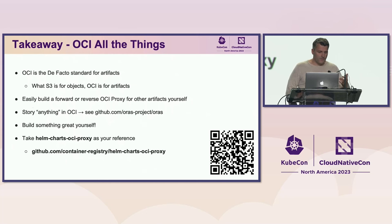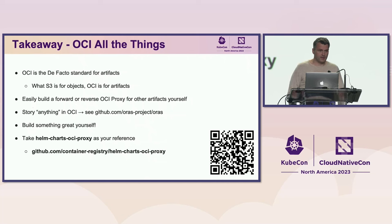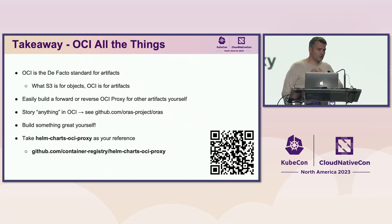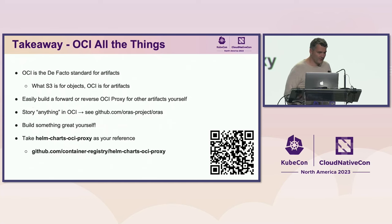You can use our project as a starting point. You can also use Project Auras as a starting point, which is also a very powerful tool that you can use for this. If you just Google for 'Helm chart OCI proxy', you will find it. Please use the project and contribute or comment. If you want to talk to me afterwards and have a question, you can find me at the Harbor booth. That's it. Thank you.